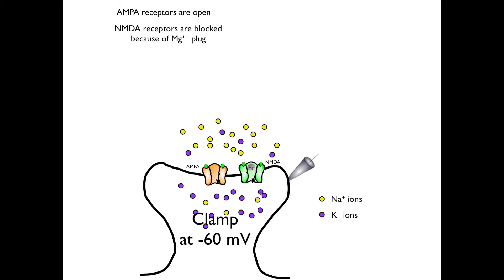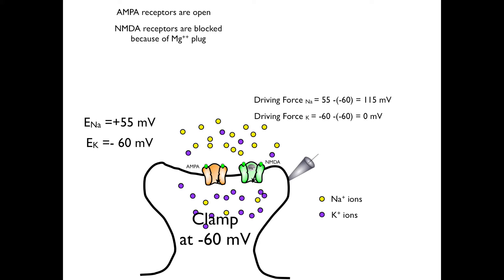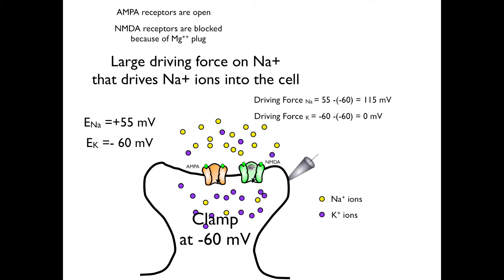As a reminder, the equilibrium potential for sodium is plus 55 millivolts, while the equilibrium potential for potassium is about minus 60 millivolts in these cells. Consequently, the driving force on sodium — that is, the difference between the equilibrium potential and the membrane potential — is 115 millivolts. In contrast, the driving force on potassium is zero; there is no driving force, because the membrane potential is equal to the potassium equilibrium potential. So there is a large force, but only on sodium, which acts to drive sodium ions from the extracellular fluid into the cell.